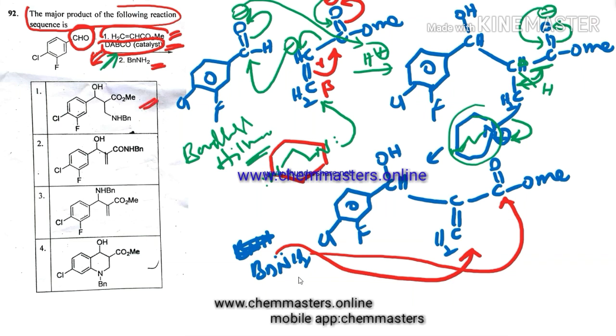Here we have two options in the options of the given problem. Option one: whenever benzyl amine is going to attack on conjugated carbon. In the second option, where the benzyl amine is going to attack on ester carbonyl carbon.